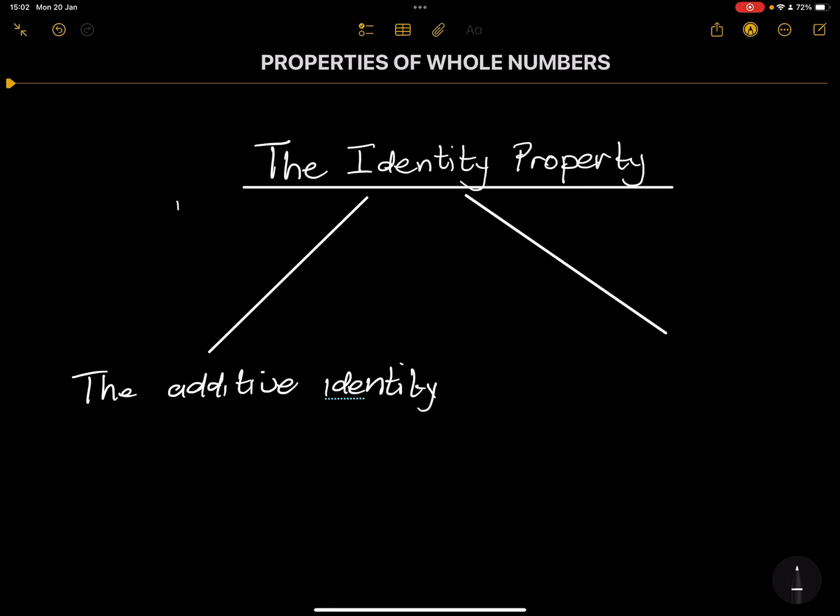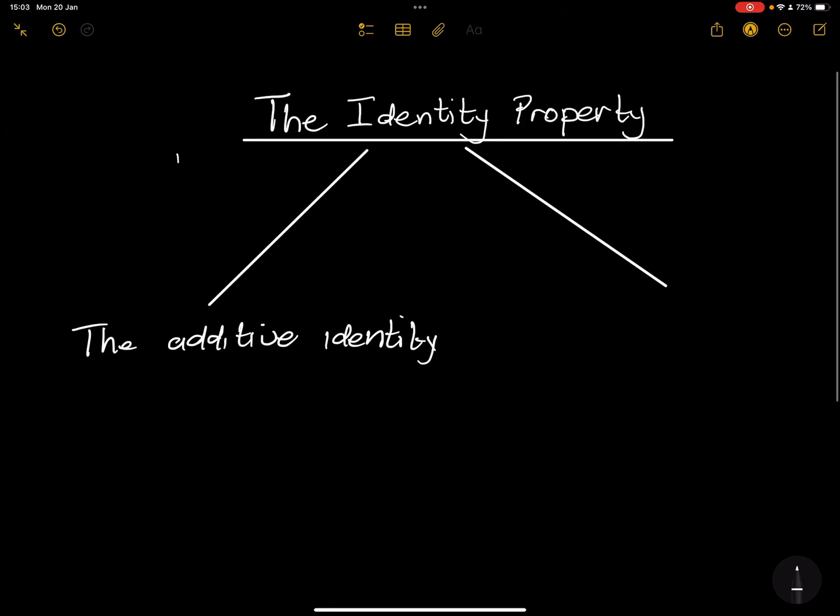Now what is the additive identity? If you think about the word identity, these are things that look the same. What causes things to look the same even though you've added something? Think about it. It's the number 0. So 0 is an additive identity. What do I mean by that? Any number that you add 0 to remains the same.